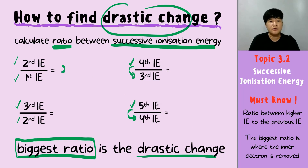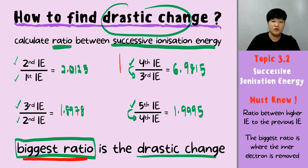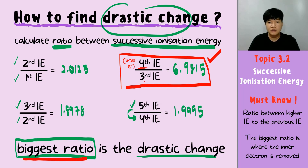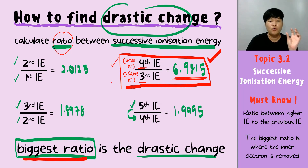For example, the ratios might be 2.0125, 1.8978, then suddenly it goes up to 6.9815, and then only 1.995. Your biggest ratio is 6.9815 — that is the drastic change. When you have identified the biggest ratio, the fourth electron is the inner electron and the third electron is your valence electron. That is how we identify the inner electron and valence electron — simply calculate the ratio, look for the largest ratio, and from that you can determine which is the inner electron and which is the valence electron.